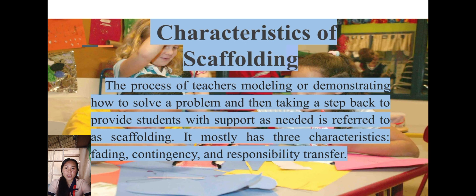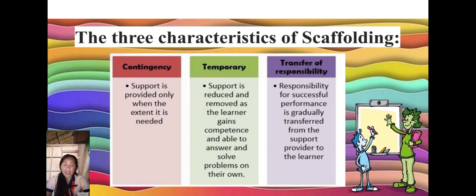The process of teachers modeling or demonstrating how to solve a problem and then taking a step back to provide students with support as needed is referred to as scaffolding. It mostly has three characteristics. First, fading, where support is provided only when it is needed. The second characteristic is temporary, where support is reduced and removed as the learner gains competency and is able to solve problems on their own. And lastly, the transfer of responsibility, where responsibility for successful performance is gradually transferred from the teacher to the learners.